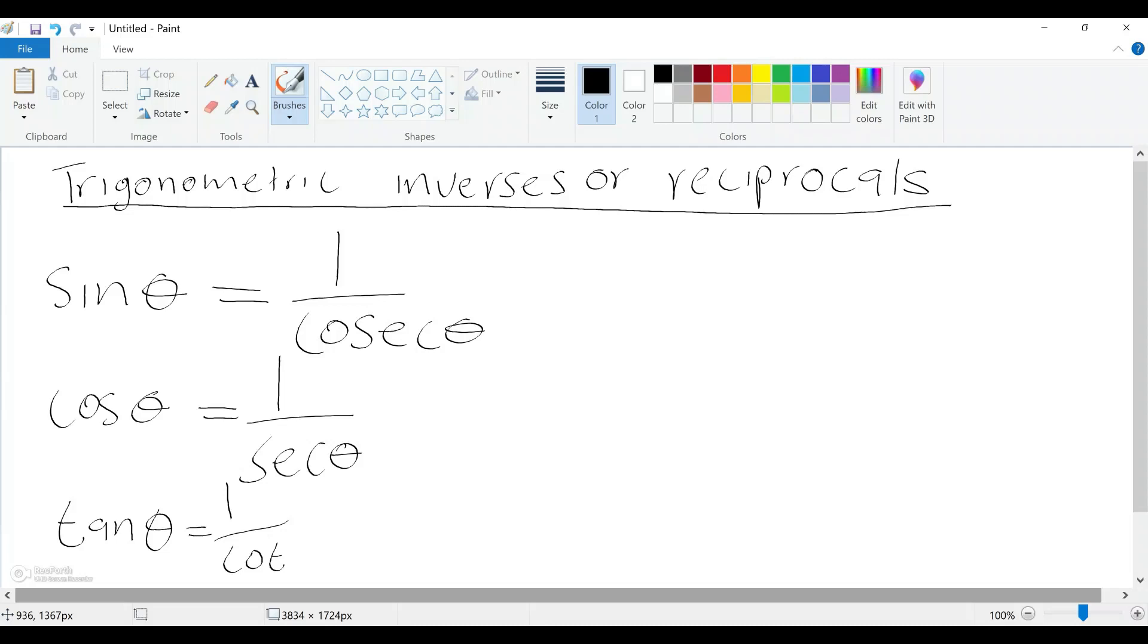Now, sometimes they can give you a question with these reciprocals. Another one that you should know is that cosec theta is the same as one over sine theta. So it's just the inverse of what we just did.